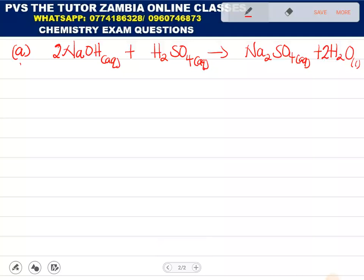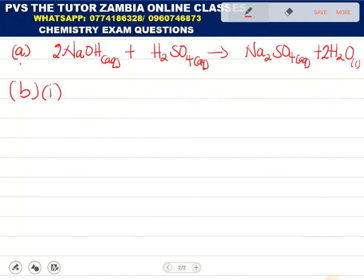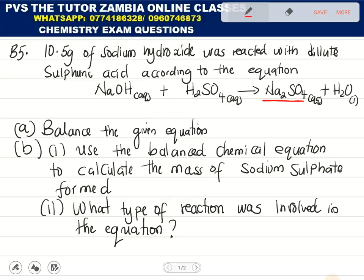Number B, B1. Use the balanced equation to calculate the mass of this guy here formed. There are two methods you can use. The one which I'm going to use, I'm going to use what to call mass ratio. I'm going to compare their relative masses and the reacting masses given.